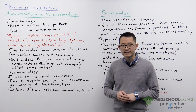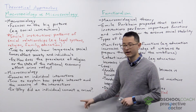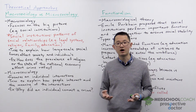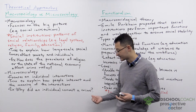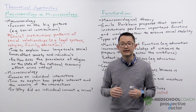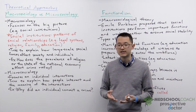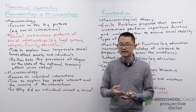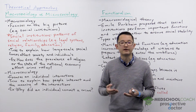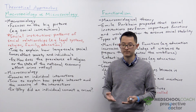What you can see is that macro sociologists and micro sociologists can study the same topic — in this case, crime — but they are taking different perspectives to study these topics, and often they are addressing different questions.